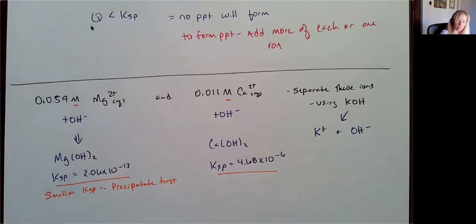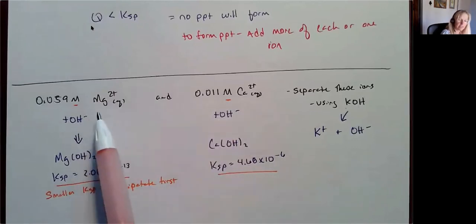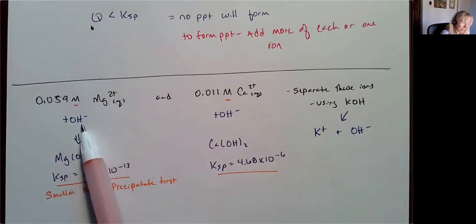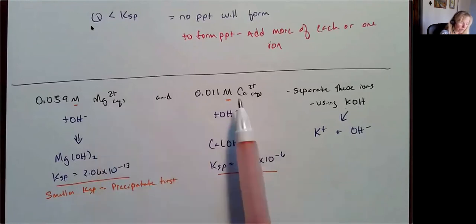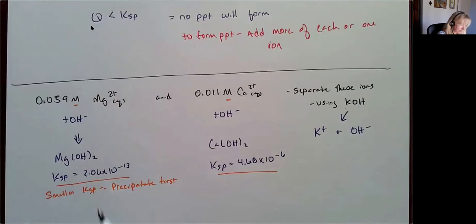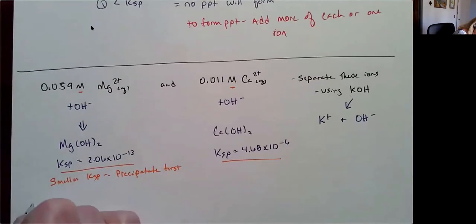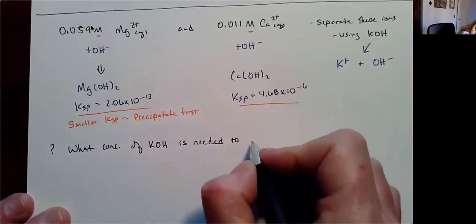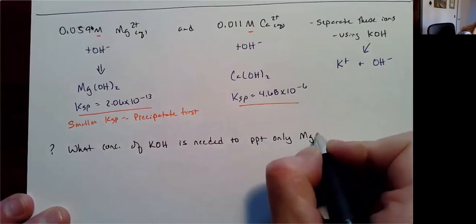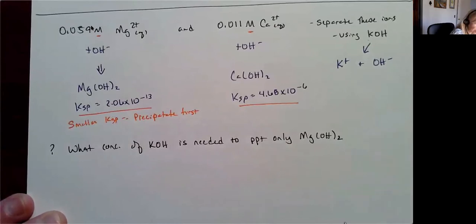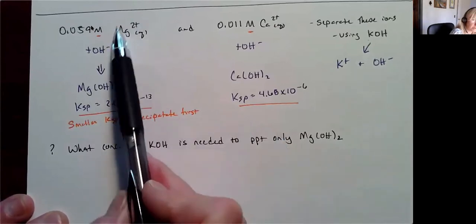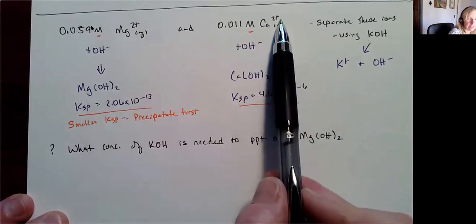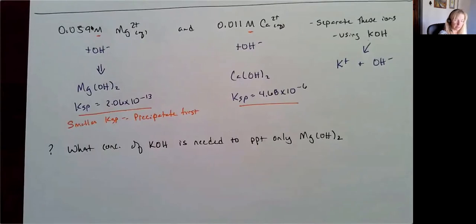If I continue to add KOH, I'm eventually going to start precipitating my calcium, but only after I've precipitated all the magnesium. So this is another way to selectively precipitate an ion. I have two cations and I'm going to figure out how much hydroxide I can add to only precipitate magnesium before I start to precipitate calcium. My question is: what concentration of KOH is needed to precipitate only magnesium hydroxide?